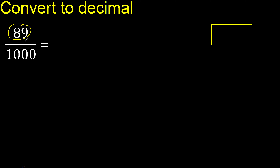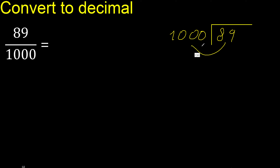89 divided by 1000. 89 is less than 1000, therefore complete — always complete with zero. Zero point, it is still less, so complete with zero again. Zero point zero — only.